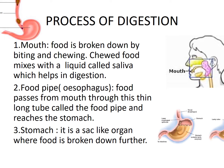Food is broken down by biting and chewing. The chewed food is then mixed with a liquid called saliva, which comes from the salivary glands. When you think of food, saliva comes into your mouth. The food mixed with saliva helps in digestion — this is the first process which happens in your mouth.